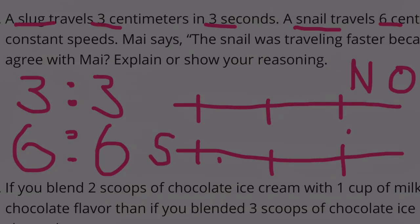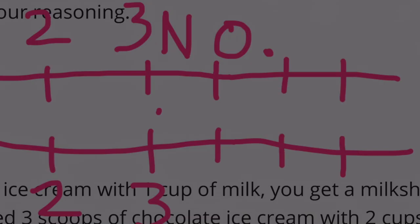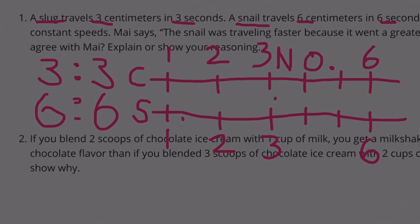This line represents seconds. This line represents centimeters. 1 centimeter, 1 second. 2 centimeters, 2 seconds. 3 centimeters, 3 seconds. 4, 5, 6. 6 centimeters, 6 seconds. They are equivalent ratios. The slug and the snail were traveling at the same rate.